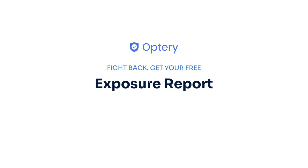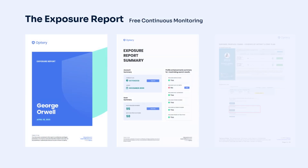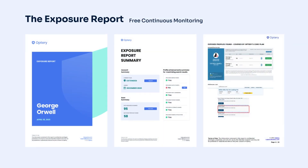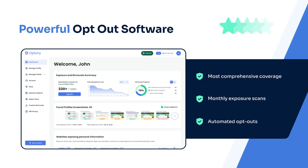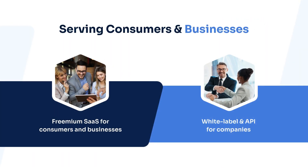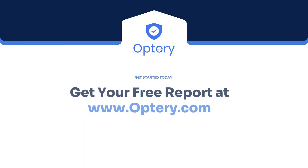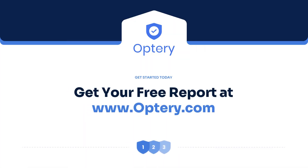That is why Optory offers the free exposure report. The exposure report shows screenshots from sites that have your data, with links to let you see that data right on the site. Use the exposure report and our how-to guides to opt yourself out for free, or sign up for an Optory paid plan and Optory will handle the monitoring and removals for you and your family members. Bonus tip: if you're a business owner worried about the security of your employees, we also have Optory for Business. Go to Optory.com to sign up for your free exposure report.